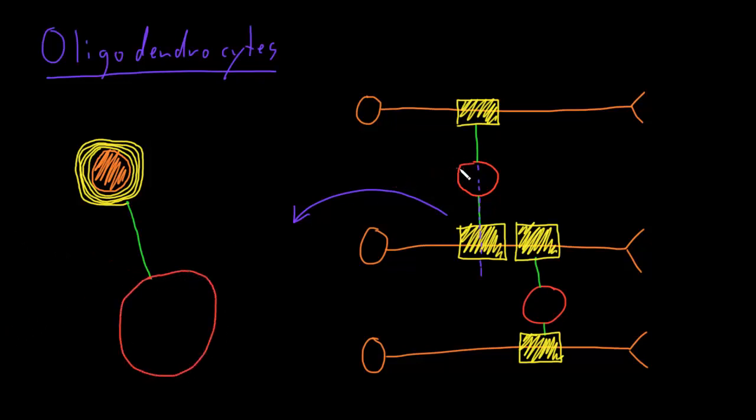So each oligodendrocyte process forms one segment of myelin on an axon, and each oligodendrocyte may myelinate multiple axons. In addition to this function of creating the myelin sheath, oligodendrocytes also appear to influence neurons and other glia and vice versa through exchange of a variety of substances.